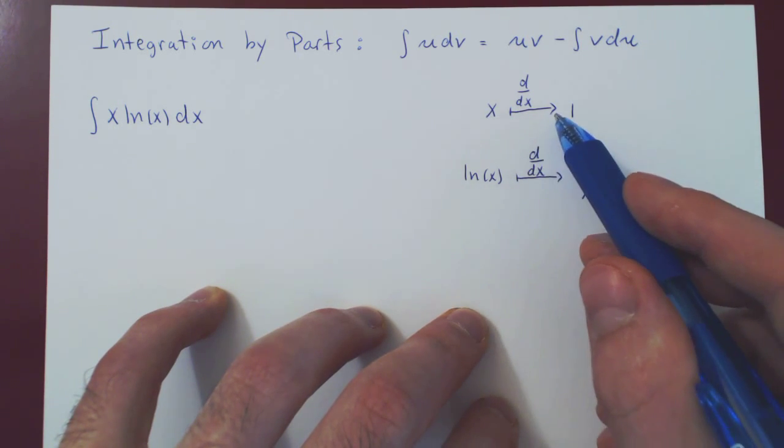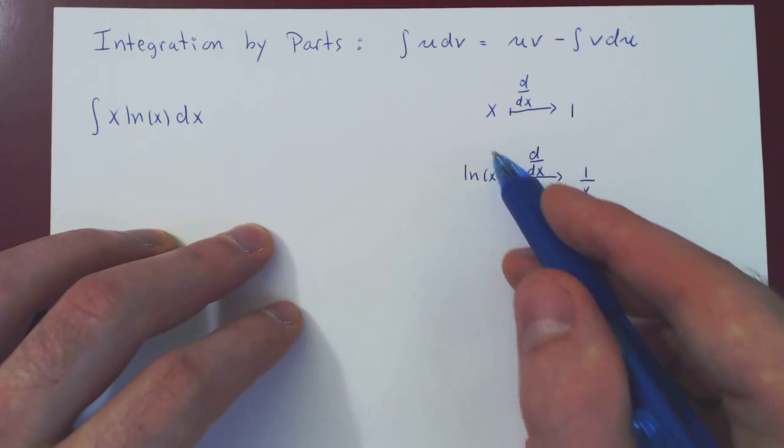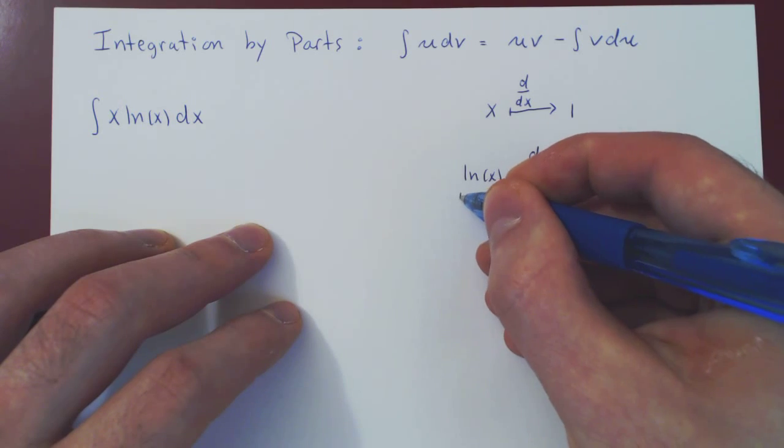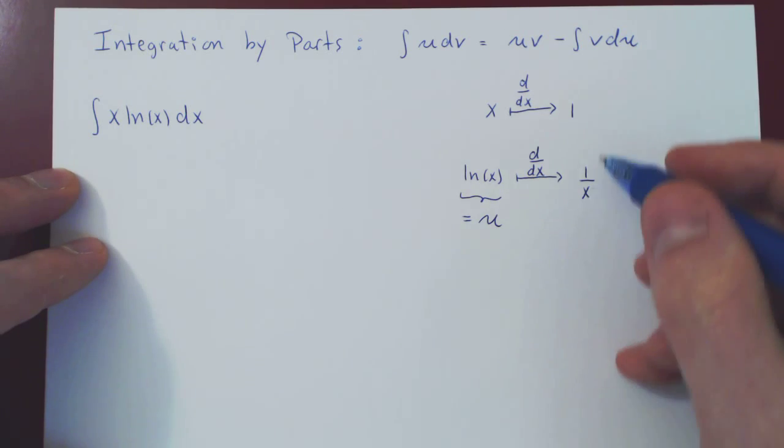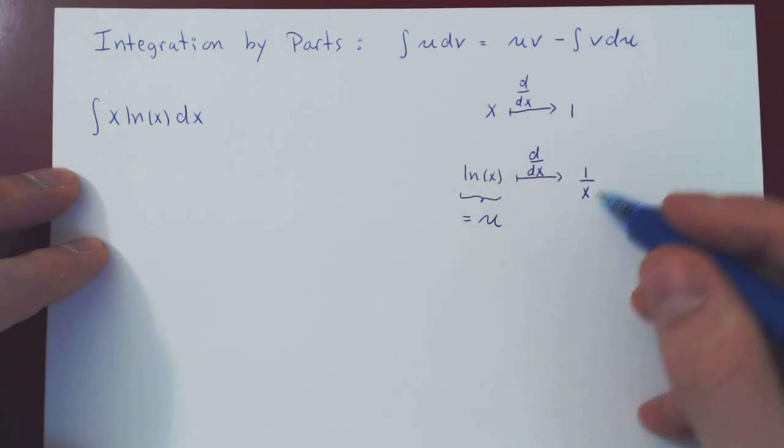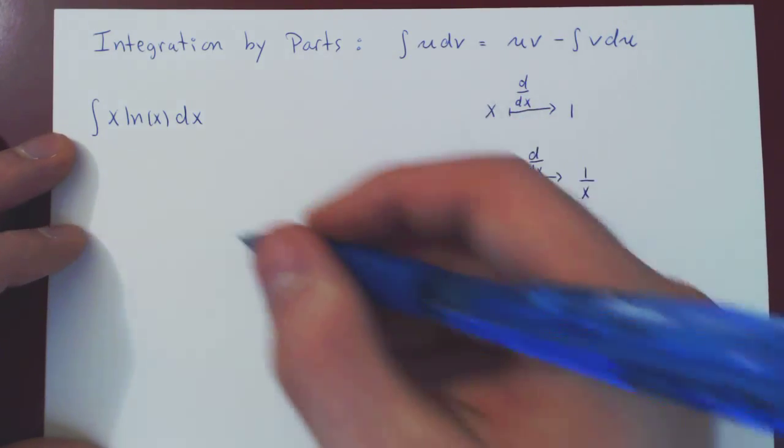This is a simplification, but this one is a much better simplification. And that's why we choose u to be ln of x. Again, this is a rule of thumb, but it works in most cases. And now let's see how we have to work this out.